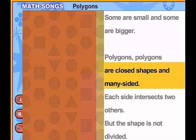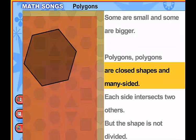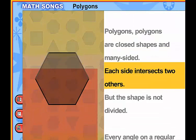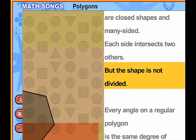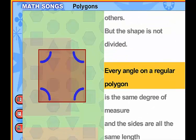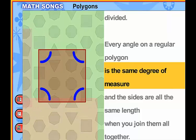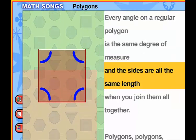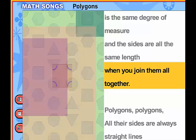Polygons, polygons are closed, shaped, and many-sided. Each side intersects to others, but the shape is not divided. Every angle on a regular polygon is the same degree of measure. And the sides are all the same length when you join them all together.